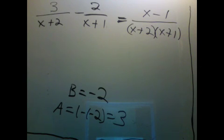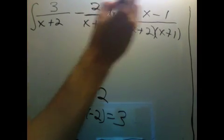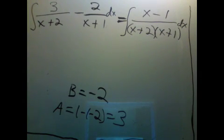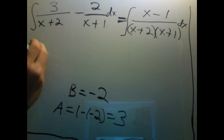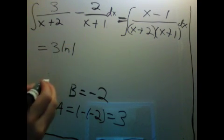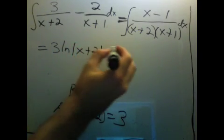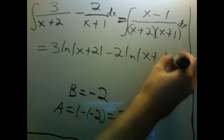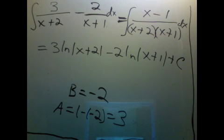And this is good because now we can integrate all of this. So both of these integrals are those natural log type integrals. We'll get 3 times natural log of x plus 2 minus 2 times natural log of x plus 1 plus c. And we could simplify this a little bit further if we wanted to, but this is nice enough.